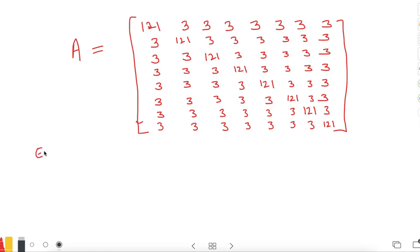Eigenvalues for A: immediately you know that each diagonal is 121 and the non-diagonal element values are 3. So clearly 118, which is the difference of these two, is the eigenvalue and it is repeated n minus 1 times, which means 7 times.